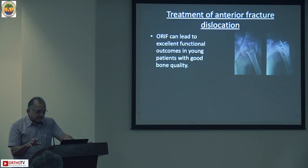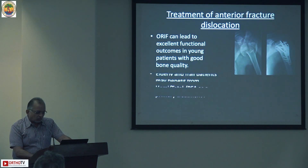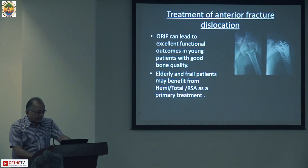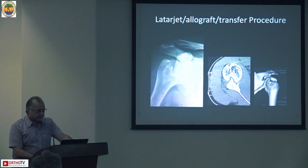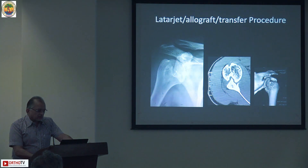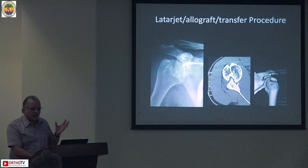To summarize the treatment of anterior fracture dislocation: open reduction can lead to excellent functional outcome in young patients with good quality bone. Elderly and frail patients may benefit from either hemi, total, or reverse shoulder depending on the quality of their rotator cuff. Allograft and transfer procedures depending on the defect in the humeral head after reduction and fixation are also advocated in young individuals.